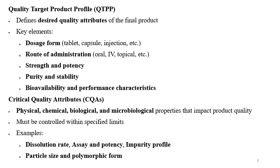Key elements of this guideline include QTPP, CQAs, CPPs, CMAs, control strategy, and the lifecycle approach — these are the elements of the quality by design principle. QTPP, or Quality Target Product Profile, defines the desired quality attributes of the final product — what should be your target when starting pharmaceutical development. Key elements of QTPP are dosage form, route of administration, strength and potency, purity, stability, bioavailability and performance characteristics, and all characteristics related to pharmaceutical and therapeutic equivalence.